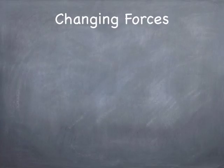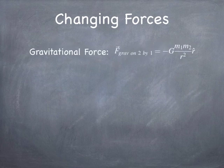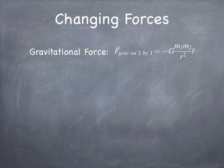First of all, we're going to be dealing with forces that are definitely not constant in this chapter. And that means, for example, the gravitational force, which arises when you have two objects separated by some distance in space. A typical example would be a planet and a star, or maybe two stars, or perhaps a planet and a spacecraft of some kind, or maybe a planet and an asteroid.